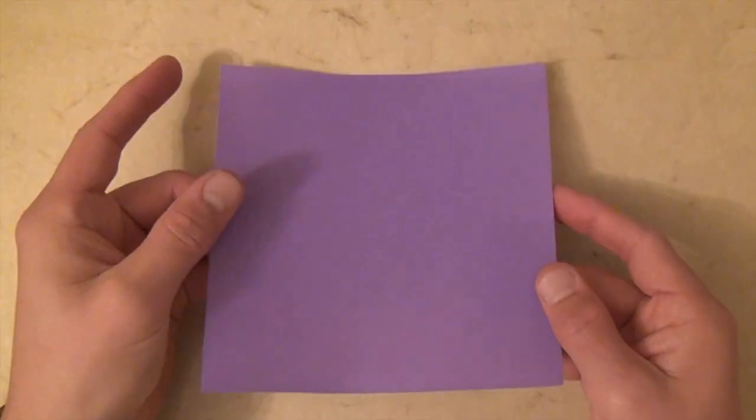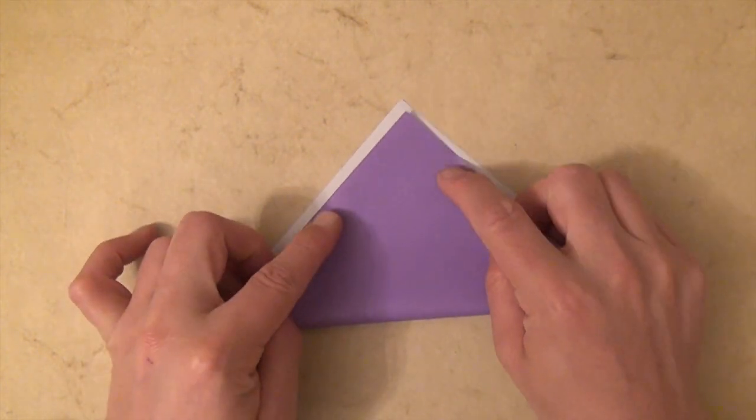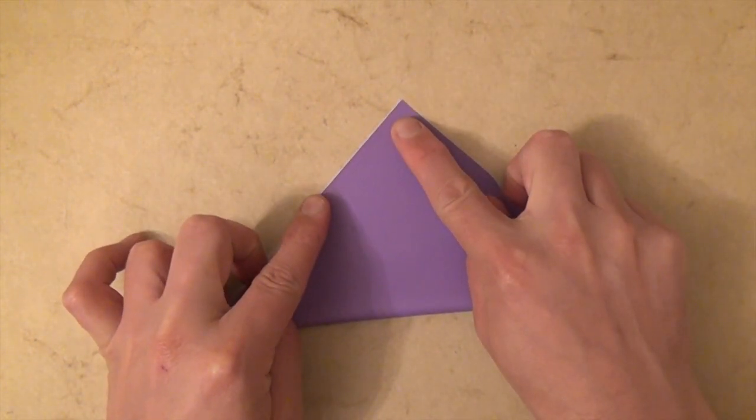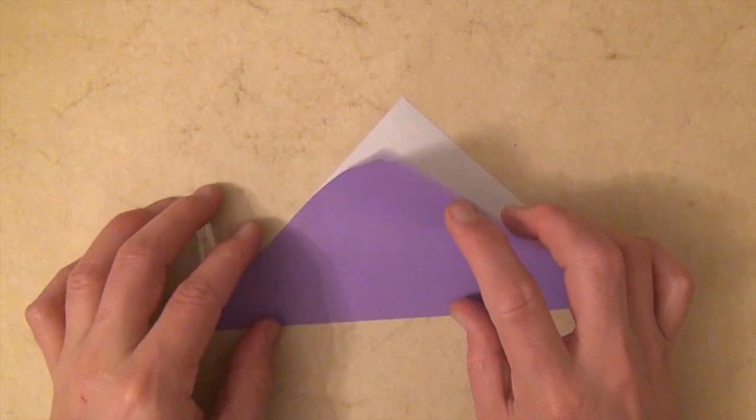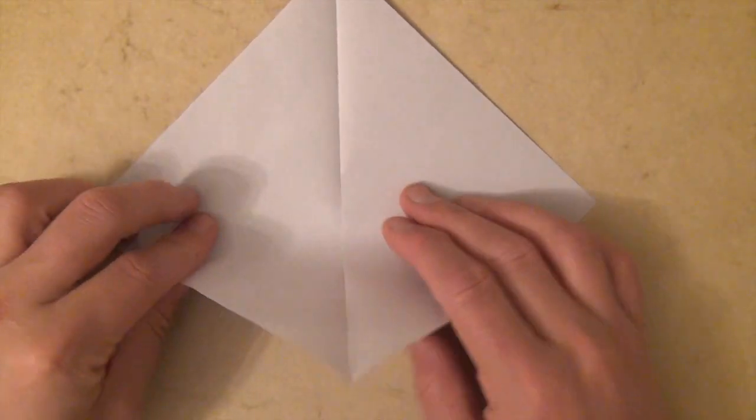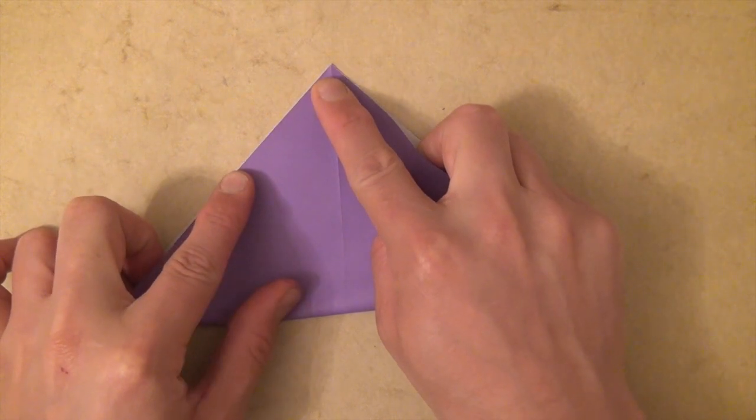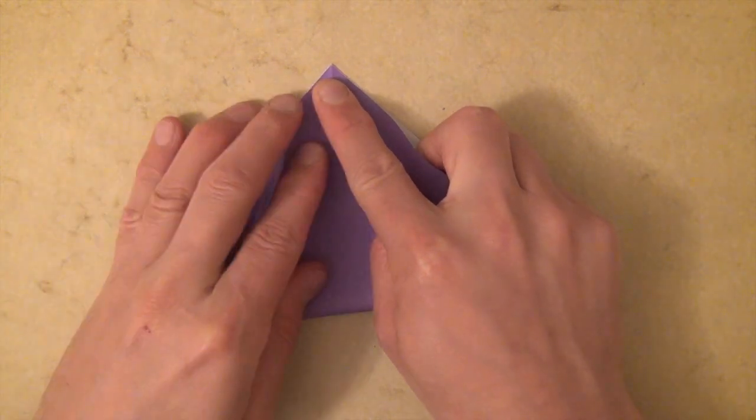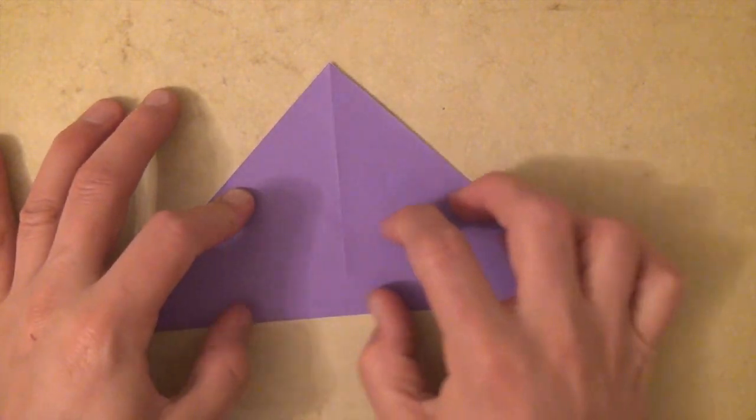So for the first module, let's start with right side up, and let's fold diagonally in half. And unfold, and rotate, and let's fold diagonally in half in this direction. Try to make really precise, sharp folds.